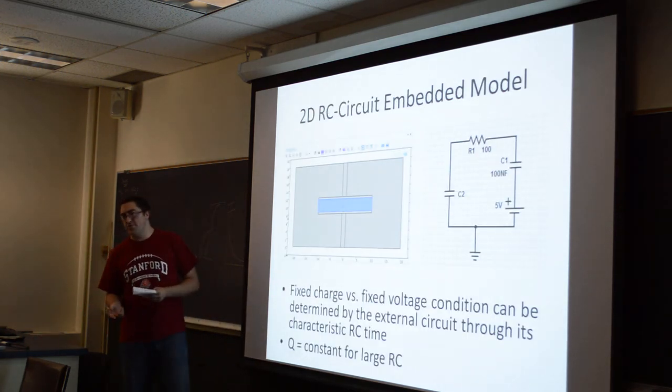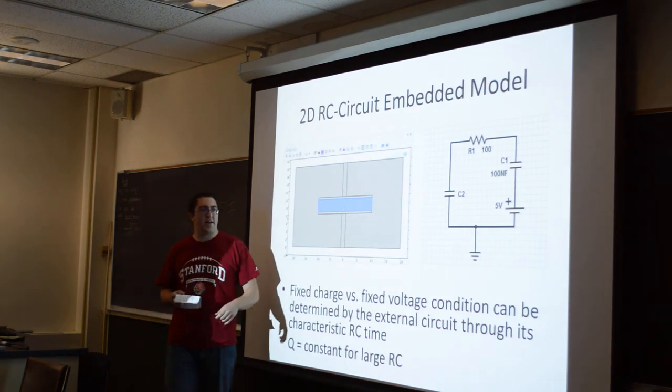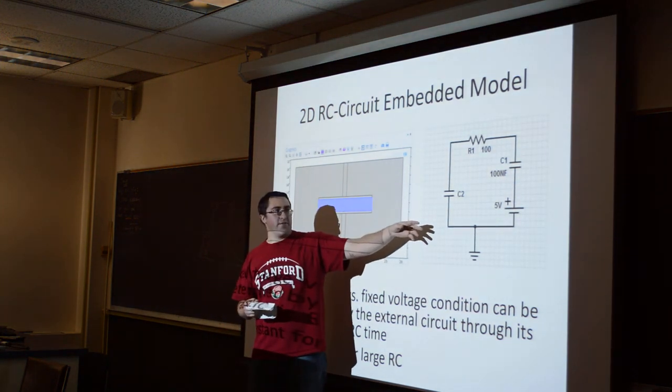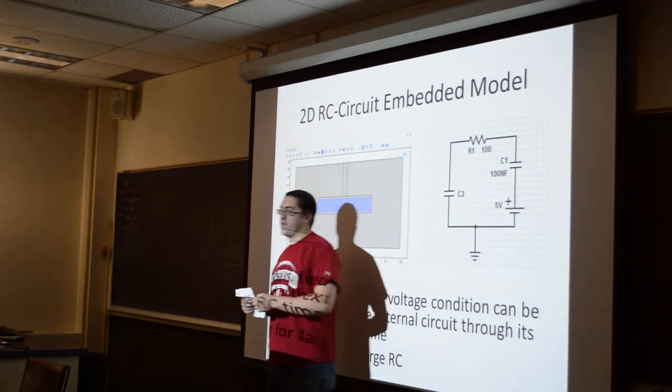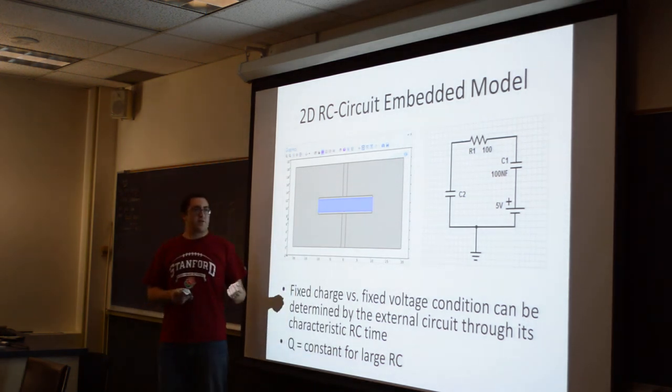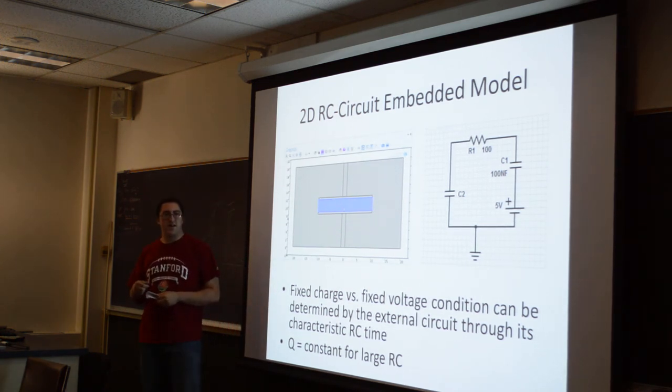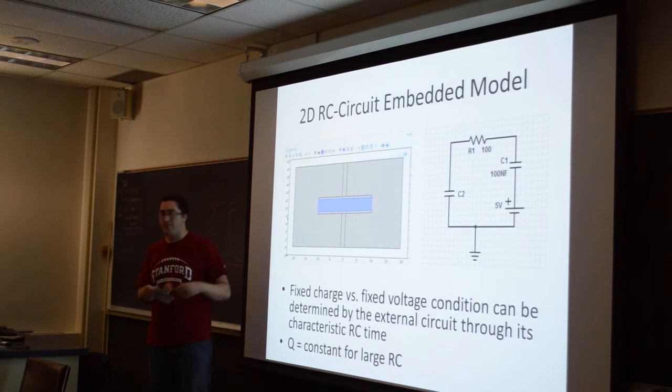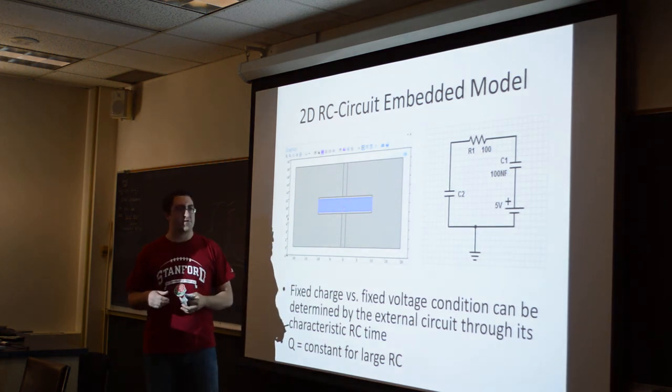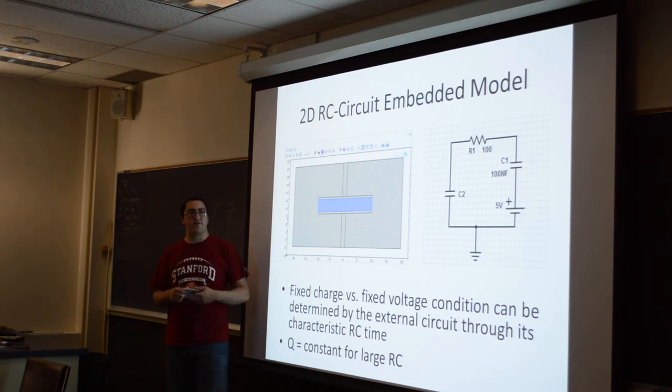Now that we've seen what the fixed voltage and the fixed charge initial conditions do independently, we want to combine the two. In order to do that, we had to build the capacitor plate system and then embed it into a circuit here. This is the external circuit that we built. C2 represents this capacitor, whereas we set the value of the resistor and the capacitor independently. What this circuit does is it simulates applying a voltage pulse to these main capacitor plates, and that voltage pulse, it takes some amount of time to establish a fixed voltage between the plates. The time that it takes for the voltage pulse to establish that fixed voltage is proportional to the characteristic RC timescale of that circuit.